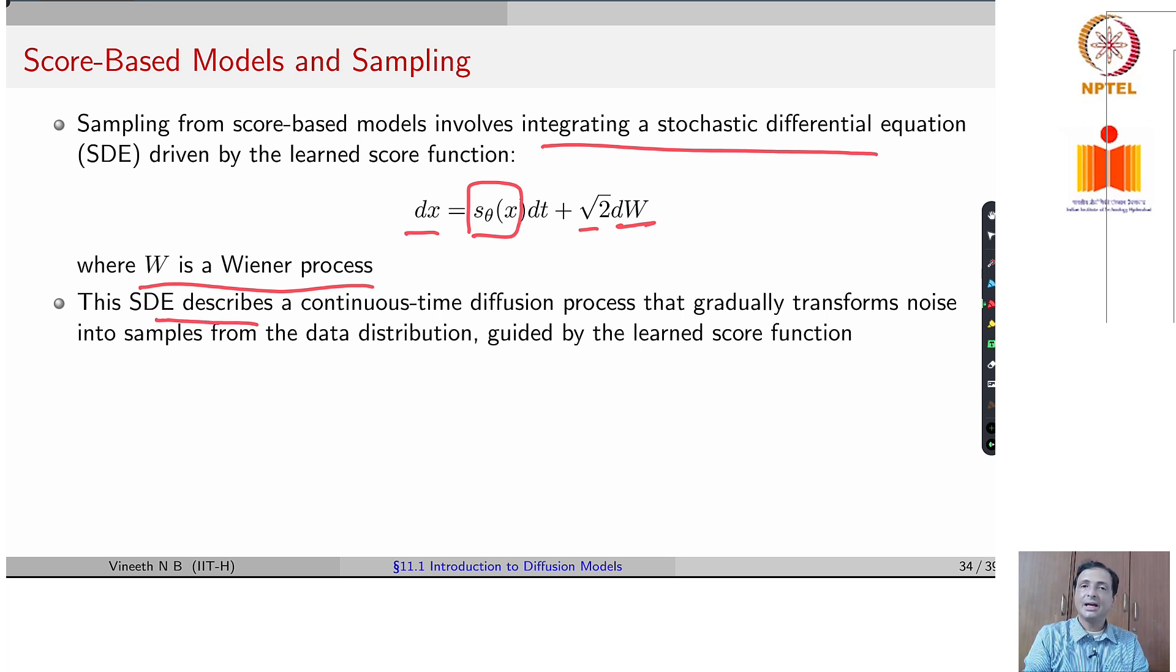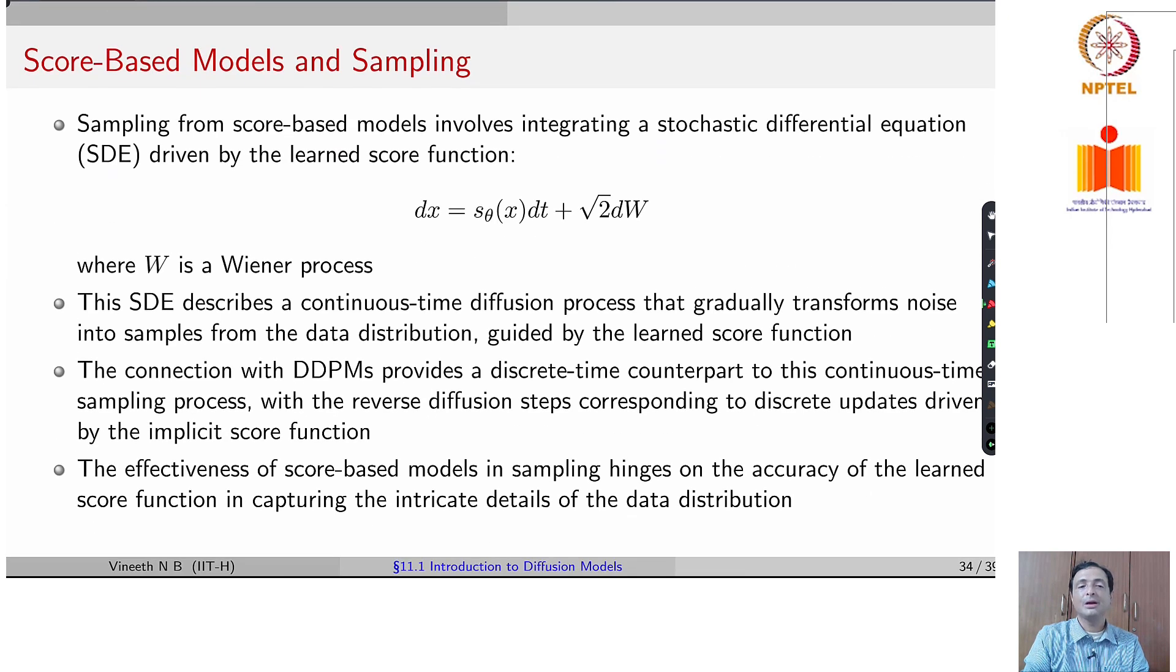And one could view our DDPMs as a discrete time counterpart to such an SDE or a score based model. To reiterate, this score based model approach can be viewed as a continuous time diffusion process. Whereas in DDPMs, we have a discrete time counterpart, where we have discrete time steps at which we see how the noisy distribution evolves in the reverse process. Very similar to score based models, both score based models and DDPMs, the effectiveness hinges on the accuracy of the learned score function in capturing the data distribution.